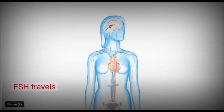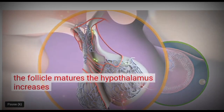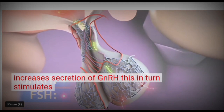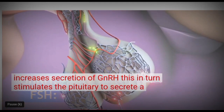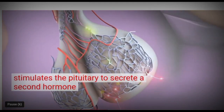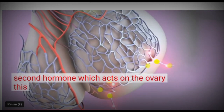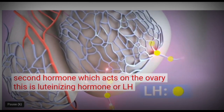FSH travels in the bloodstream and increases secretion of GnRH. This in turn stimulates the pituitary to secrete a second hormone which acts on the ovary — this is luteinizing hormone, or LH.